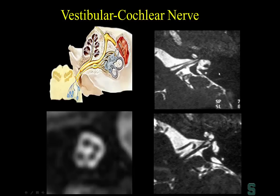On this coronal/sagittal view, posterior is back and anterior is front. Here's the facial nerve, and at the same level is the superior vestibular nerve. Beneath the seventh nerve — 'Coke down' — is the cochlear nerve heading through the cochlear canal into the modiolus. The inferior vestibular nerve is posterior and inferior, and this thickening of the ganglion is Scarpa's ganglion.